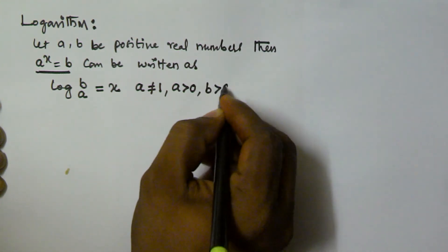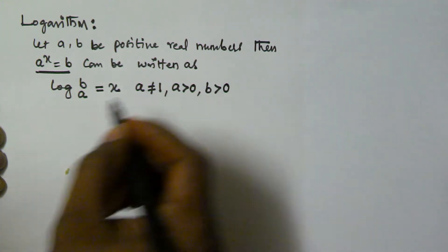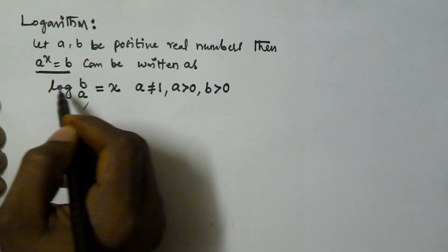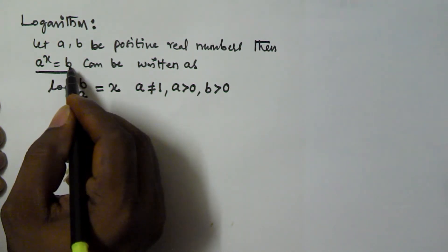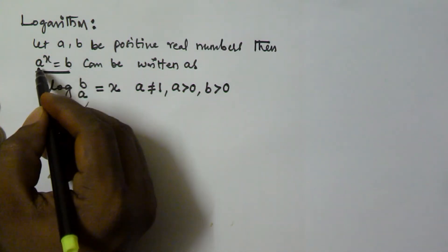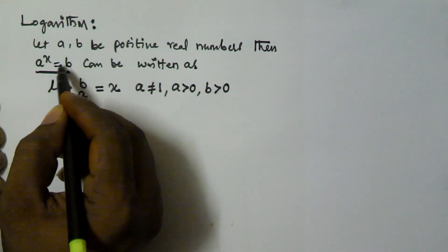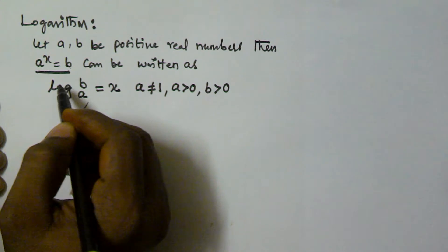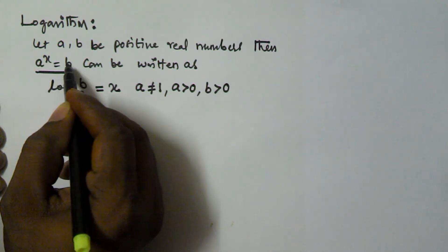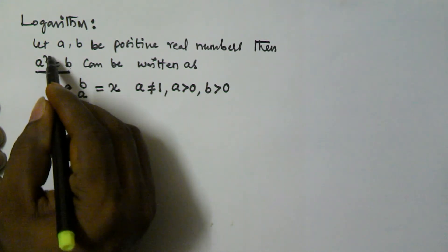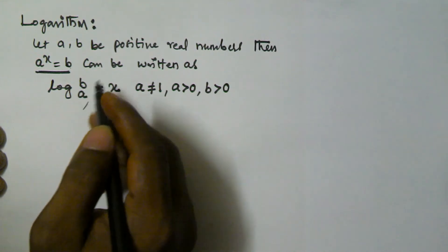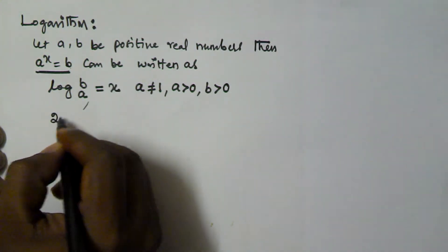So when we have a to the power of x is equal to b, that can be written as log b base a is equal to x. In logarithm format: x is equal to log b base a.